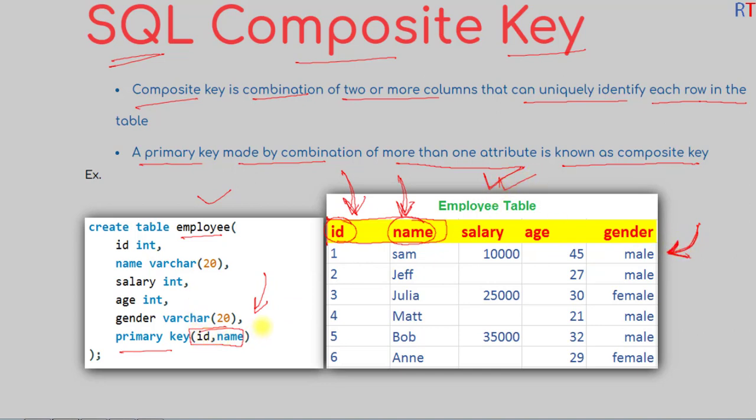So in simple words, it can be said that a composite key is a key which is the combination of more than one column of a given table. Hope you understand the concept. We'll see you in the next one. Thank you.